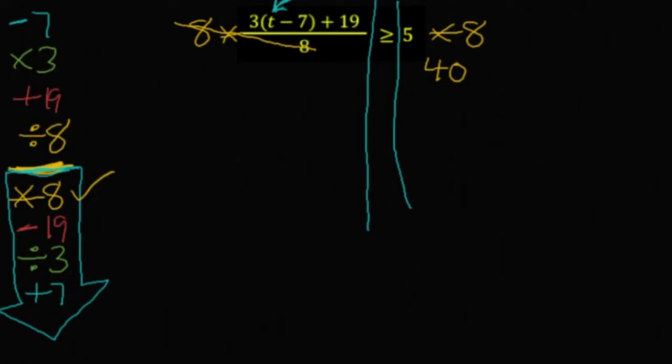Minus 19 gets rid of a plus 19. Minus 19 over here keeps the balance. And we will have 21.